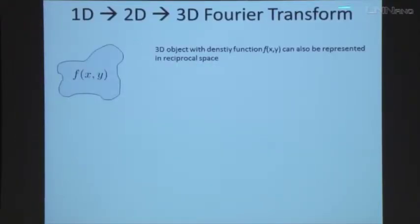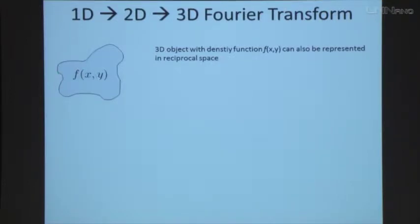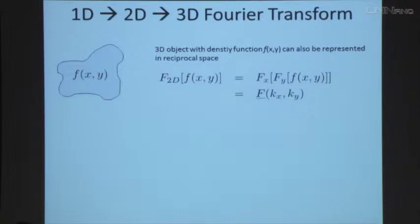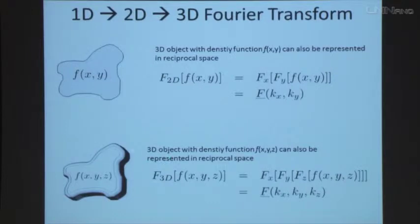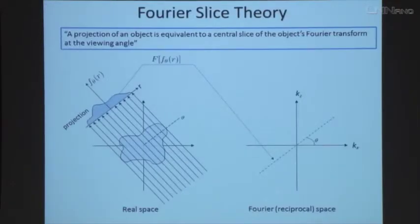We can go from 1D to 2D to 3D Fourier transforms. A 3D object with a density function — let's just consider a 2D object, since going to 3D is trivial, you just add a third dimension — can also be represented in what's called reciprocal space. This is a function of intensities or mass located at different positions, but we can also decompose this into the frequencies that the object is actually made of. If you take the Fourier transform, you get out a transform which is now in spatial frequency coordinates rather than actual mass density coordinates. Going to a 3D object just means taking three Fourier transforms one after the other.